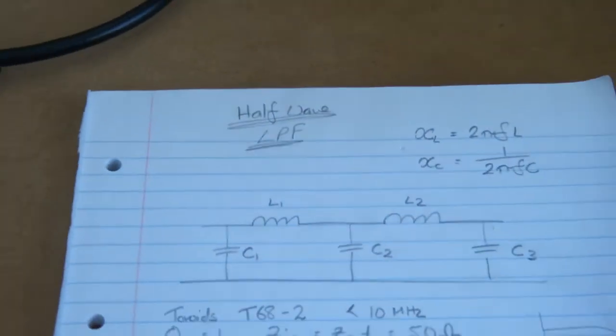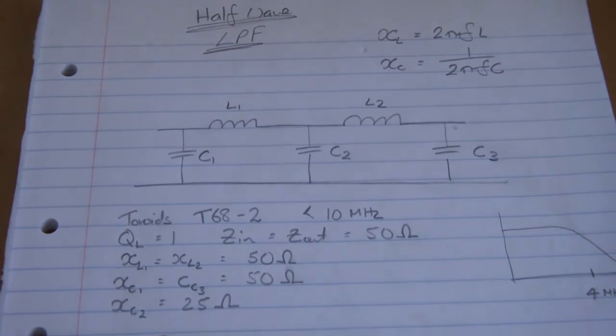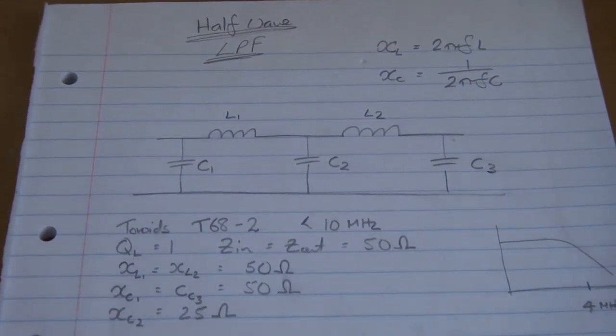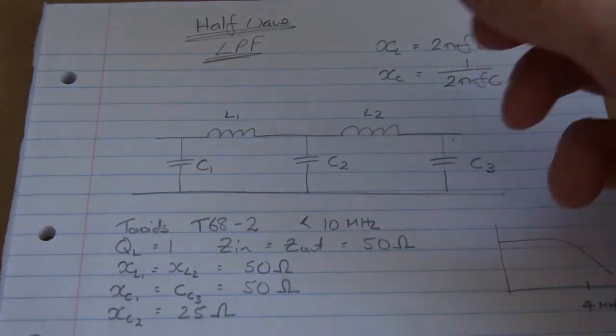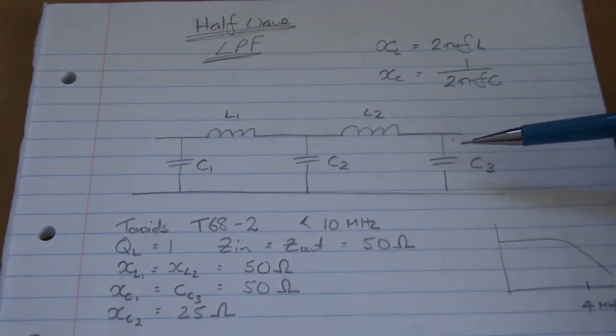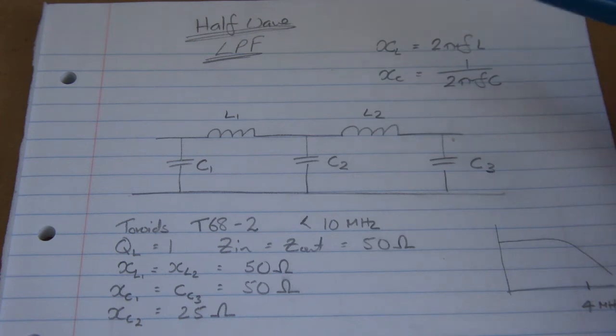So just moving back to here. The filter itself is a half wave low pass filter, two stages back to back. This is the configuration here. We've got RF coming in, two inductors and three capacitors. And just before we start, just recapping, our inductive reactance is 2πFL, our frequency of operation, our inductance.